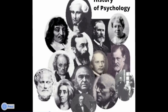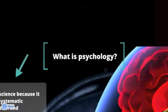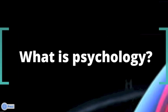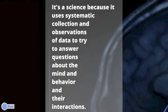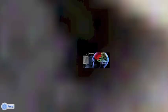In this video we're going to talk a little about the history of psychology and expose you to some of the figures you should be familiar with for the AP Psychology test. First, what is psychology? Psychology is a science because it uses systematic collection and observations of data to try to answer questions about the mind, behavior, and their interactions. It is a science because it collects data from observations.